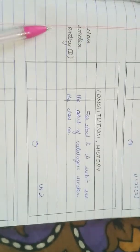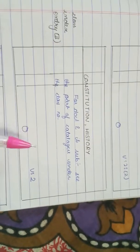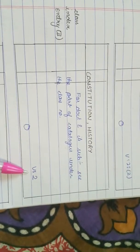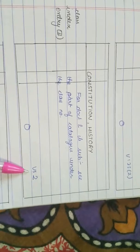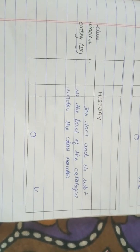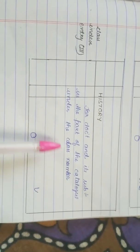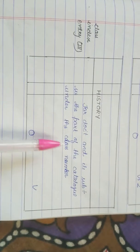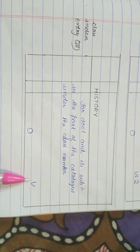Second class index entry: constitution, history, and we have call number V colon 2. Third class index entry: history, for documentation and its subdivision, see the part of catalog — that is V.